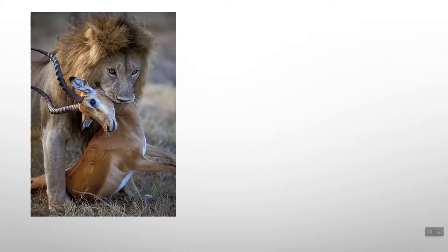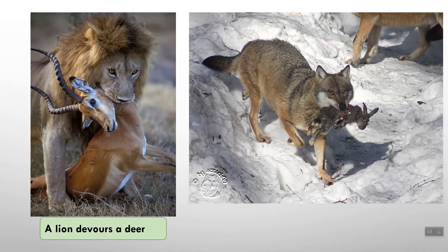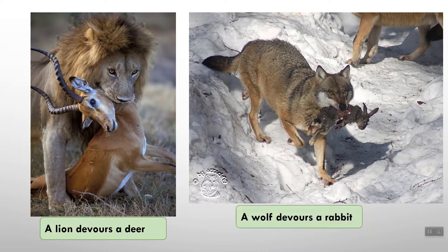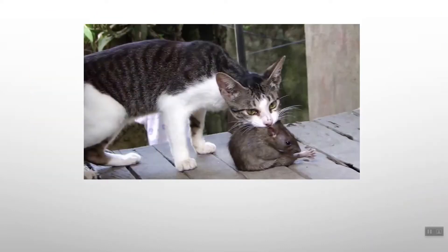For example, a lion devours a deer — the lion is the predator and the deer is the prey. A wolf devours a rabbit — the wolf is the predator and the rabbit is the prey. Similarly, a cat and a mouse show a predation relationship: the cat is the predator and the mouse is the prey.